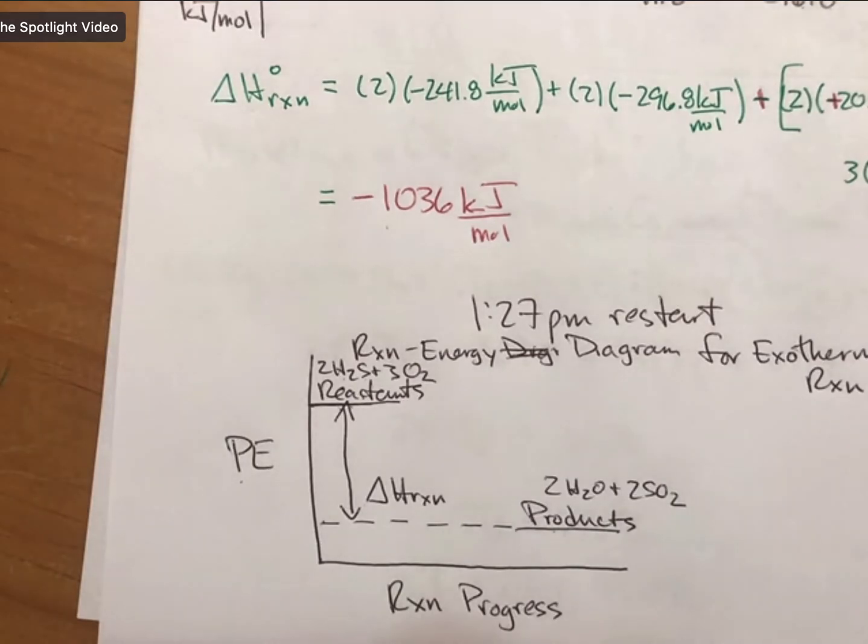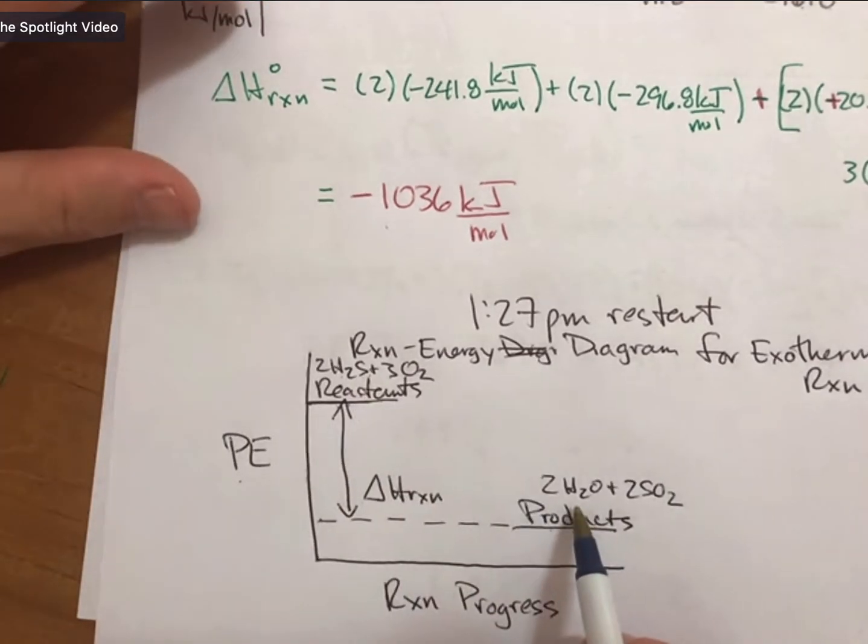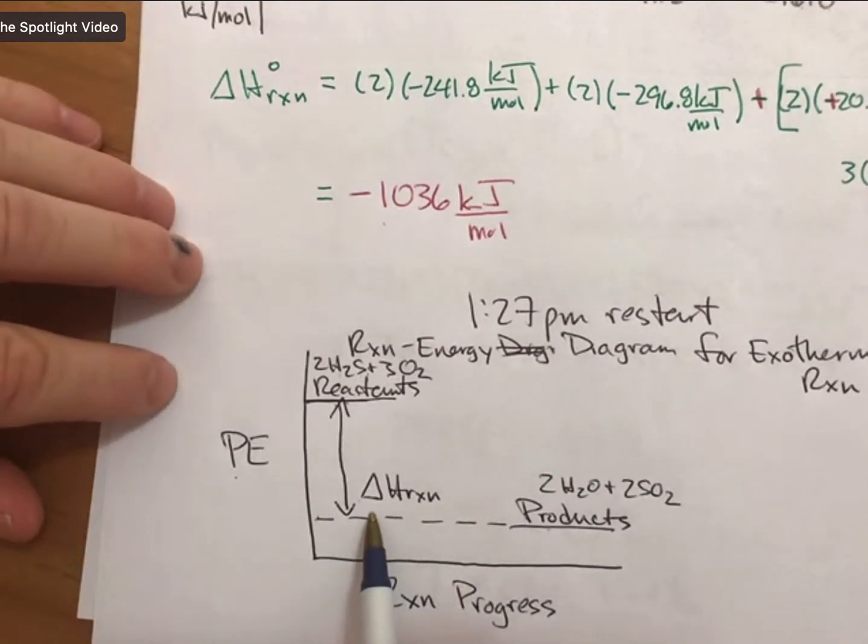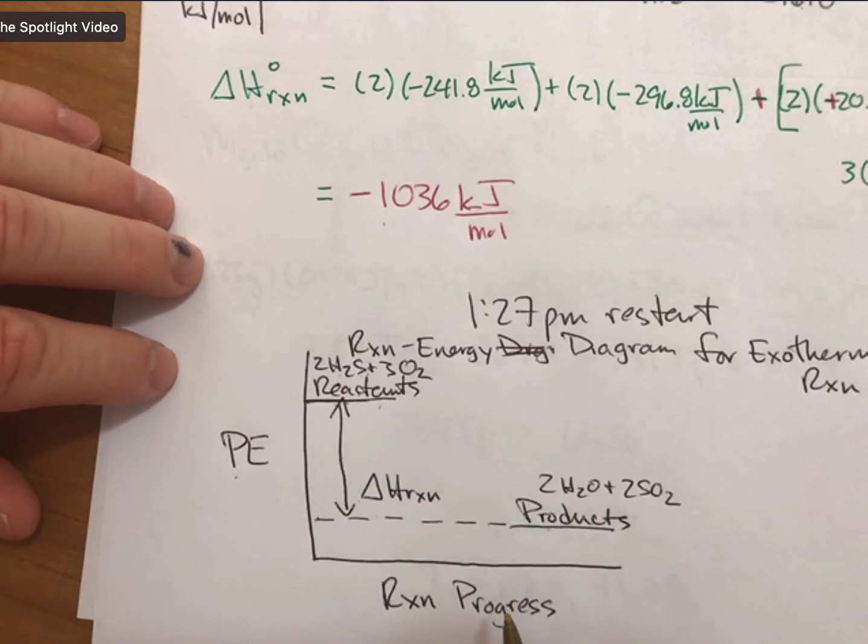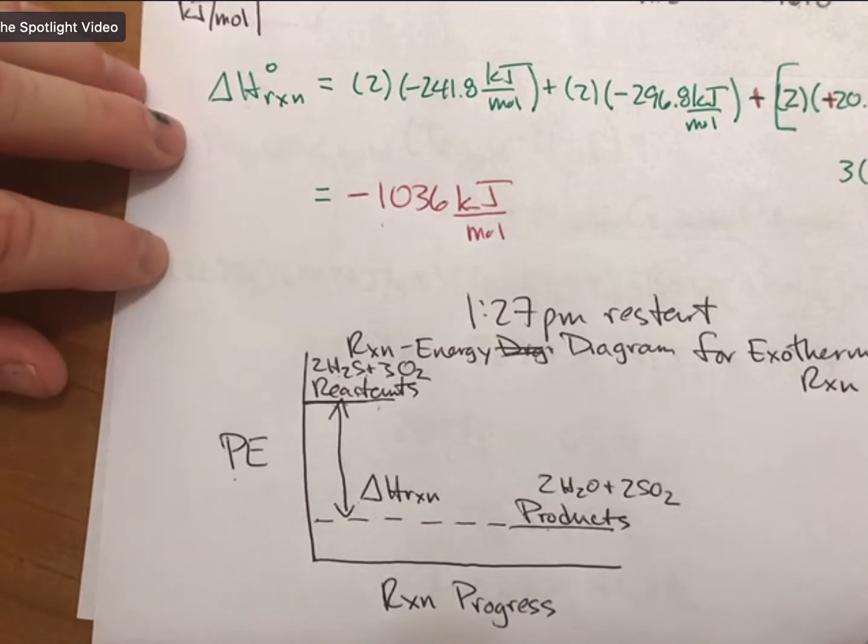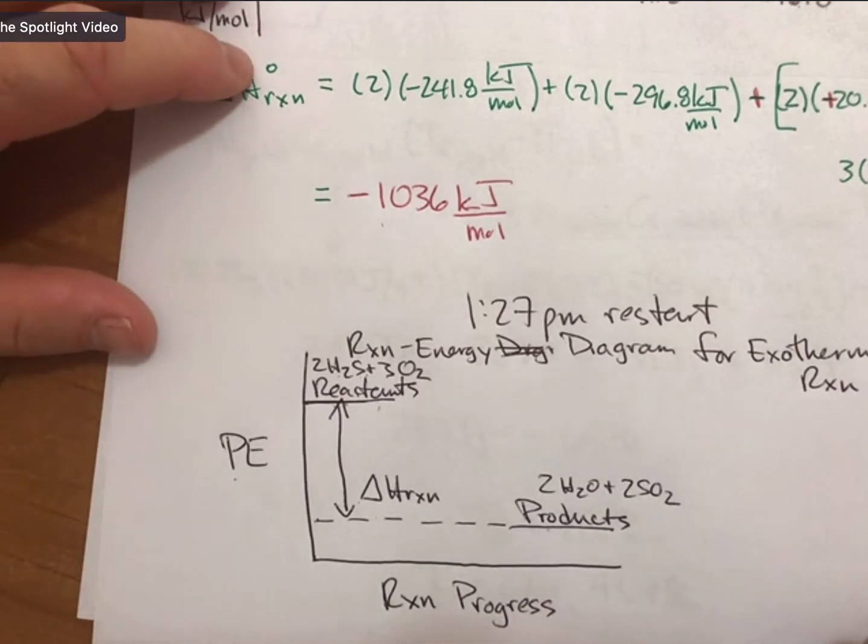It says to label delta H reaction. Delta H reaction is always the difference between products and reactants. Label reactants and label products on each diagram. So Darrell, that's how you do this one. I can't remember if there are any endothermic reaction energy diagrams, so let me sketch one of those for you as well.